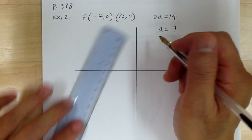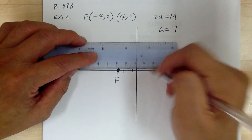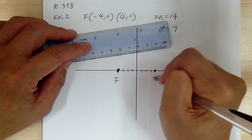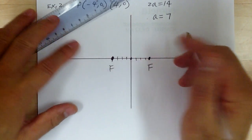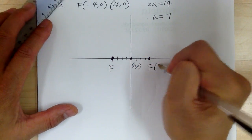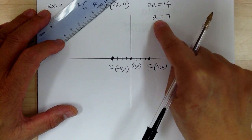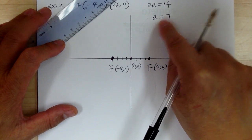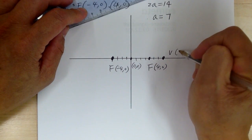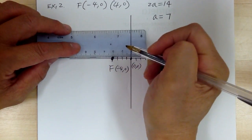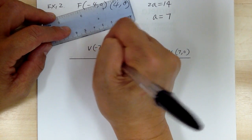Sketch it out to find the equation. The foci are at (−4, 0) and (4, 0). The center is the midpoint of the two foci, so center is at (0,0). Remember a and the foci are always in the same direction. Since a equals 7, from center you go 7 in the x direction, giving vertices at (7,0) and (−7,0).